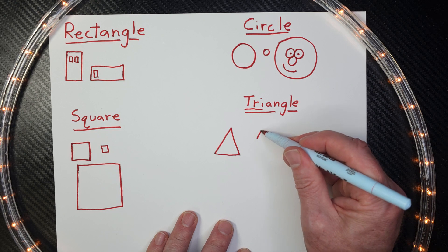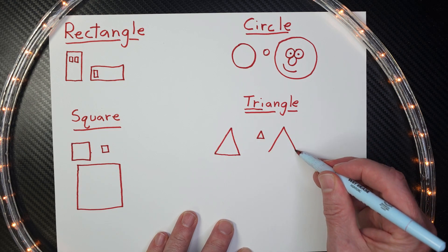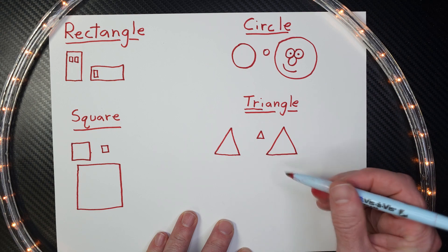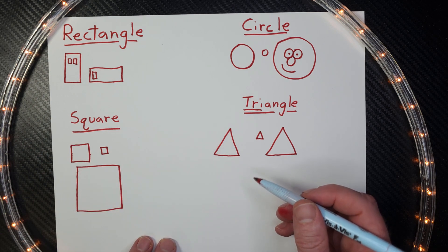Triangles can be small and they can be big, just like that. These are fun shapes to draw. Now you can take all of these shapes and you can make different things.